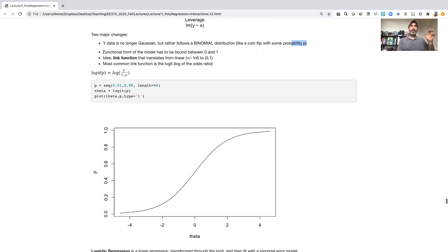And the second part, like I said before, is this idea of a functional form that has to be bound over the domain of this distribution. And so we have a link function that translates from the linear domain, plus or minus infinity, to the zero-one domain.